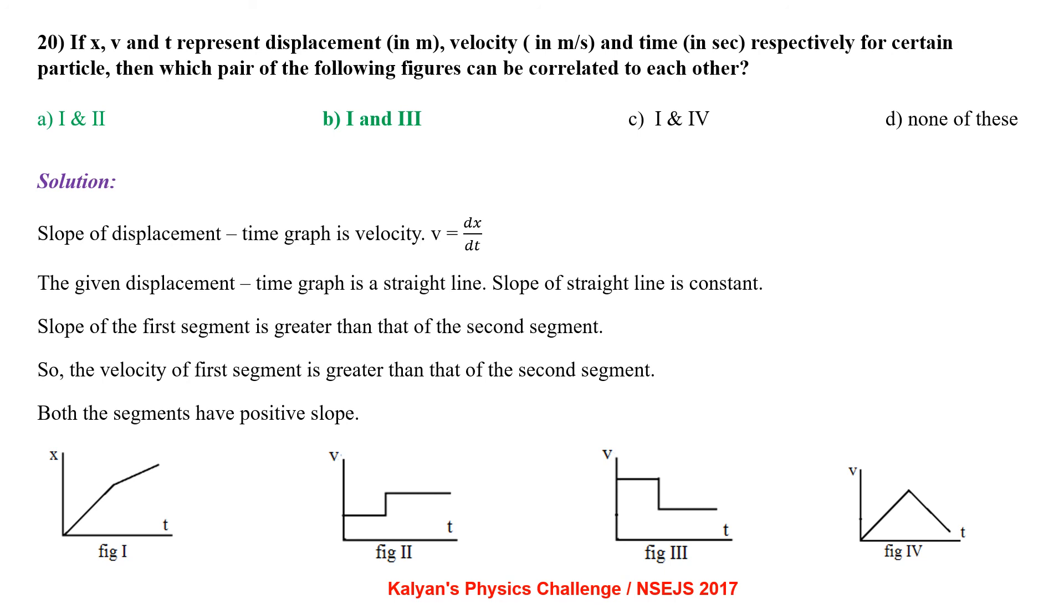Slope of the first segment is greater than that of the second segment. So, the velocity of the first segment is greater than that of the second segment. So, both the segments have positive slopes. So, the graphs 1 and 3 can be correlated.